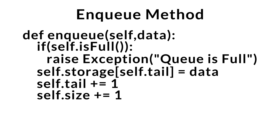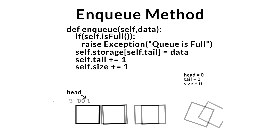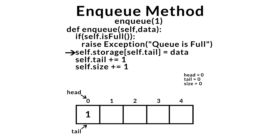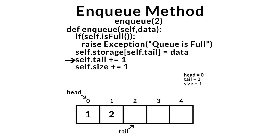Let's look at our NQ method in action. Starting from the queue after invoking init, we invoke NQ passing in 1. We check if the queue is full — it's not — so we store 1 at the back. We increment the tail index to get the new end position, then increment the size. For the second example, we NQ 2. We check if the queue is full — it's not — store 2 at the back, increment the tail index, and increment the size.